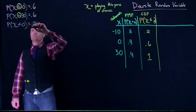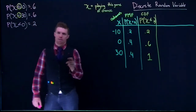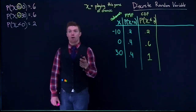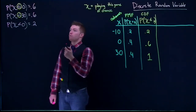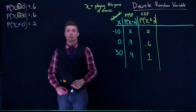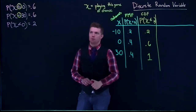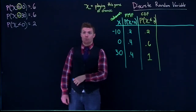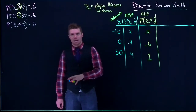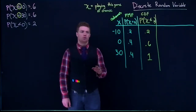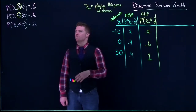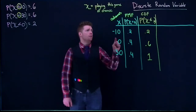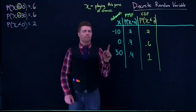The first and third probability statements look almost identical except for the inequality. That difference changed the probability, because 'less than 0' only includes -$10, giving a probability of 0.2. With discrete random variables, keeping track of 'less than or equal to' versus 'less than' is important — they can give different results.